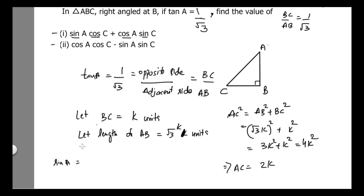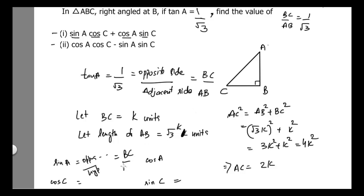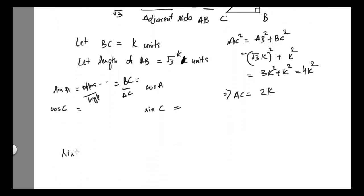We know that sin of any angle equals opposite side divided by hypotenuse. The opposite side to angle A is BC and the hypotenuse is AC. So sin A equals BC divided by AC, which is K divided by 2K, giving us 1 by 2.